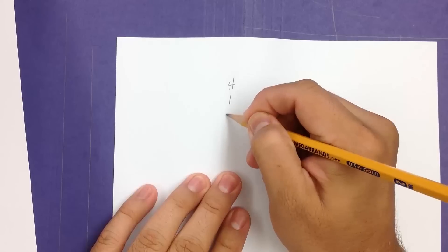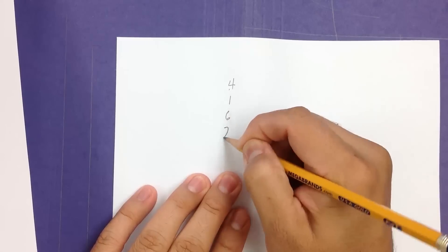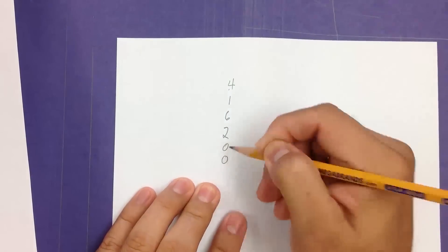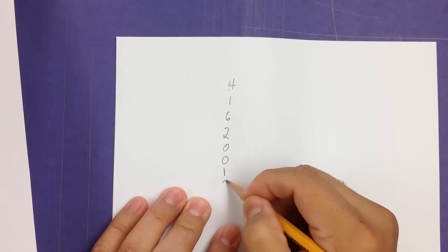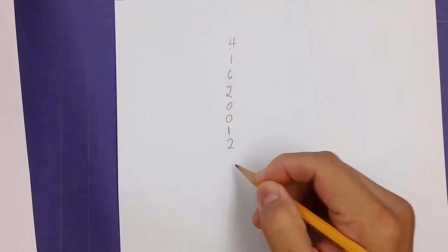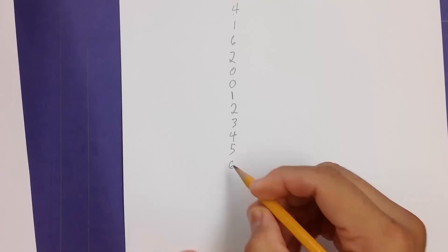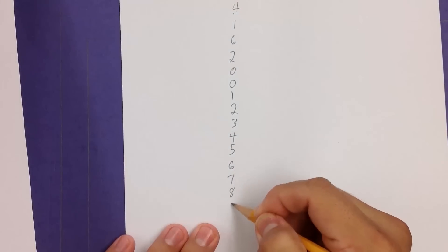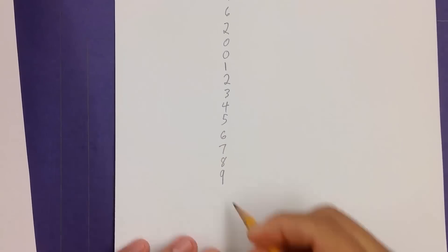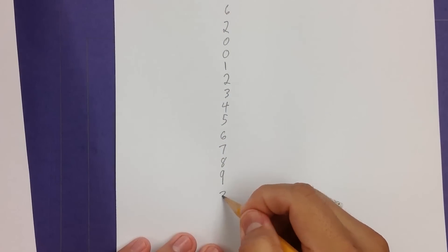I'm going to put 4, 1, 6, 2, 0, 0. It's almost like the other one. 1, 2, 3, 4, 5, 6, 7, 8, 9. And we're looking to see if that is 3.